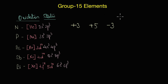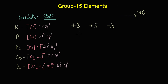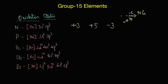From Group 15 onwards, many elements show negative oxidation states because they are very close to the noble gas configuration. To attain a stable octet, they only need to gain electrons, and gaining electrons results in a negative oxidation state. This is why negative oxidation states become very common in Groups 15, 16, and 17.